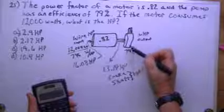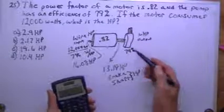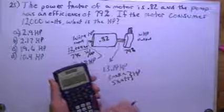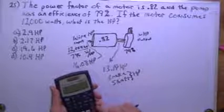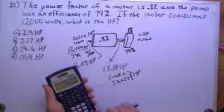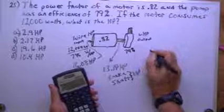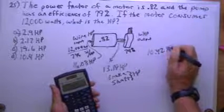Then I'm going to lose some more going into the pump. So the efficiency is 79%, so I'm going to go times .79 for 79%. And that means I'm going to have 10.42 horsepower coming out.